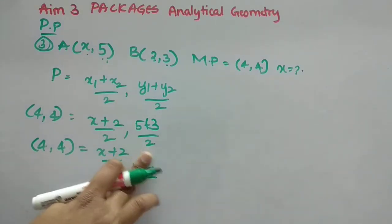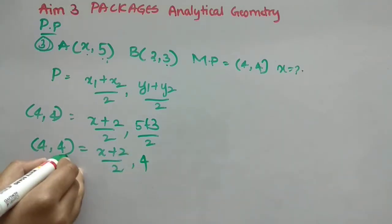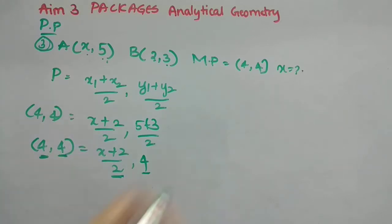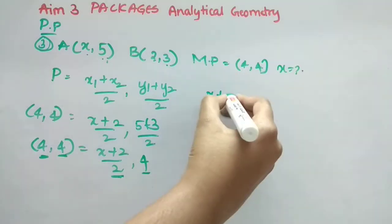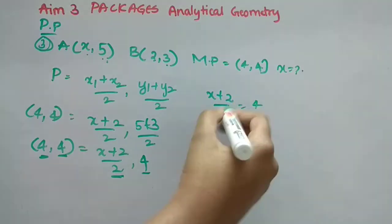So here point is also given, right? (4,4). You should mention that also. So now, (4,4) is equal to X plus 2 by 2, 8 by 2. So 8 by 2 is nothing but 4, right? So mention it as 4. So these two values are equal. Then these two values also should be equal. So we can equate them to find X value, right?